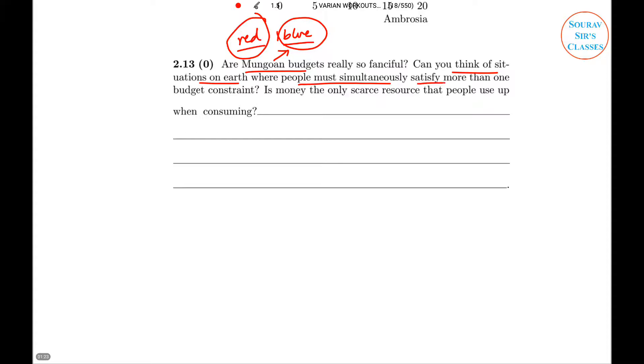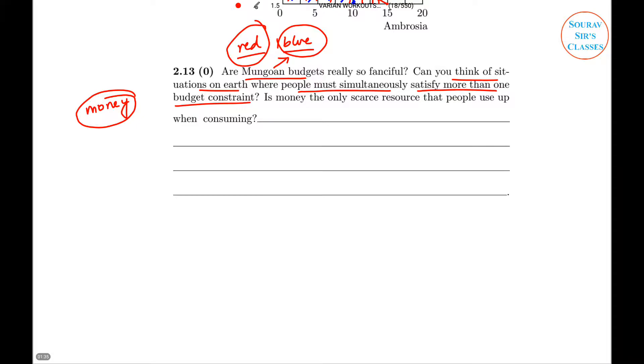So here we are not only talking about money, the income budget constraint, not only that, something else. Do we have to simultaneously satisfy? Is money the only scarce resource that people use up when consuming? So this is the answer. It is a much more theoretical approach.